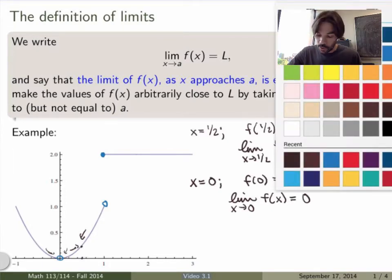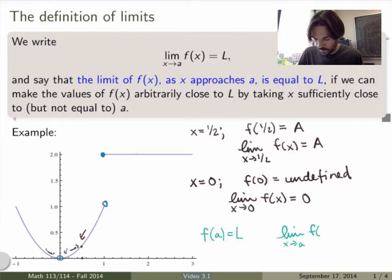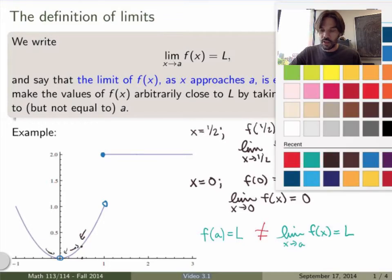So what's important to note here is the statement f(a) equals L and the statement limit as x goes to a of f(x) equals L are not the same thing at all. These are very, very different statements. These two statements are not the same thing in general.